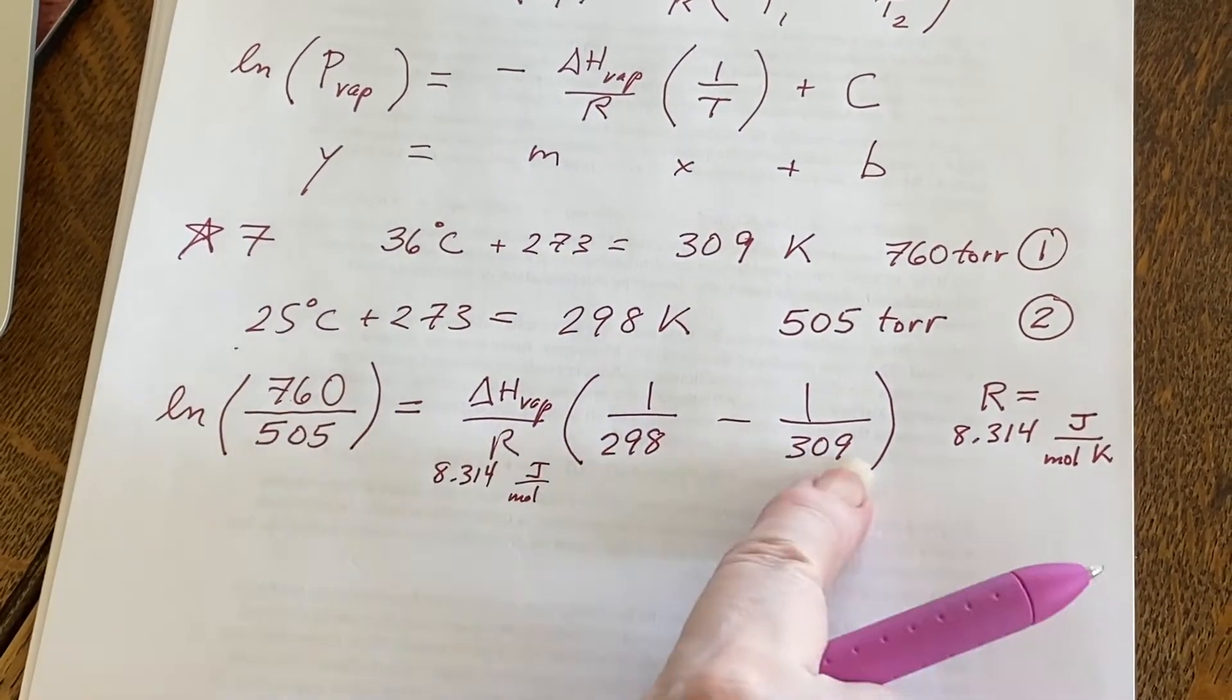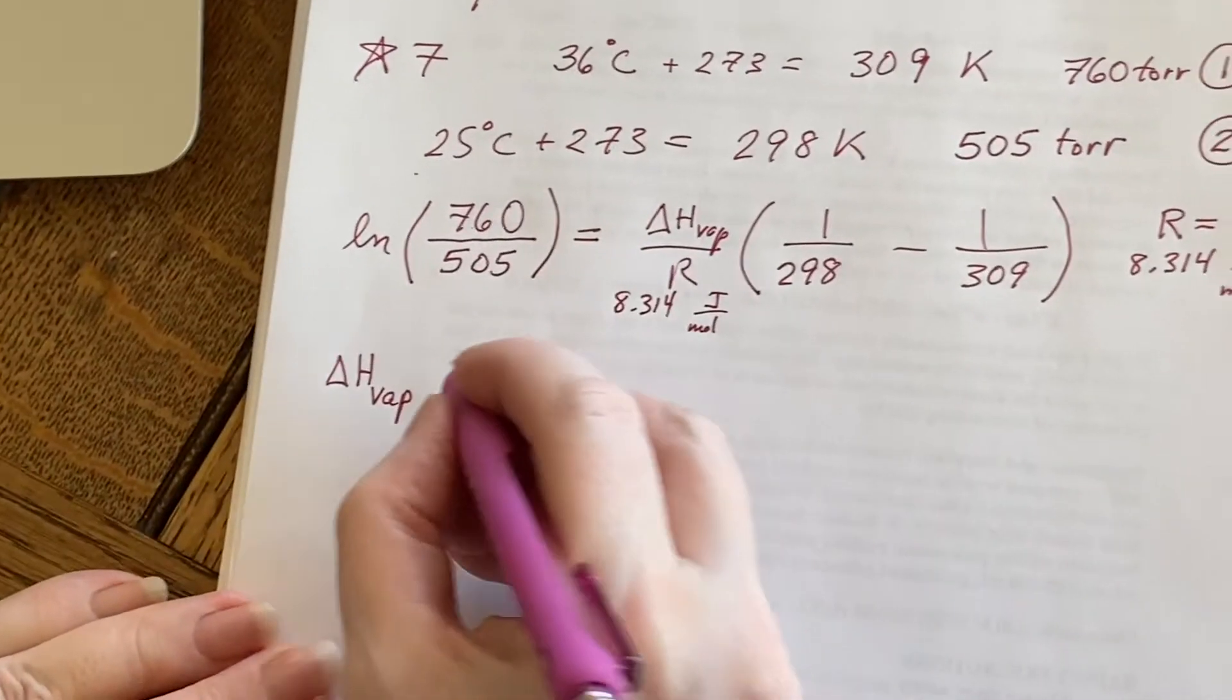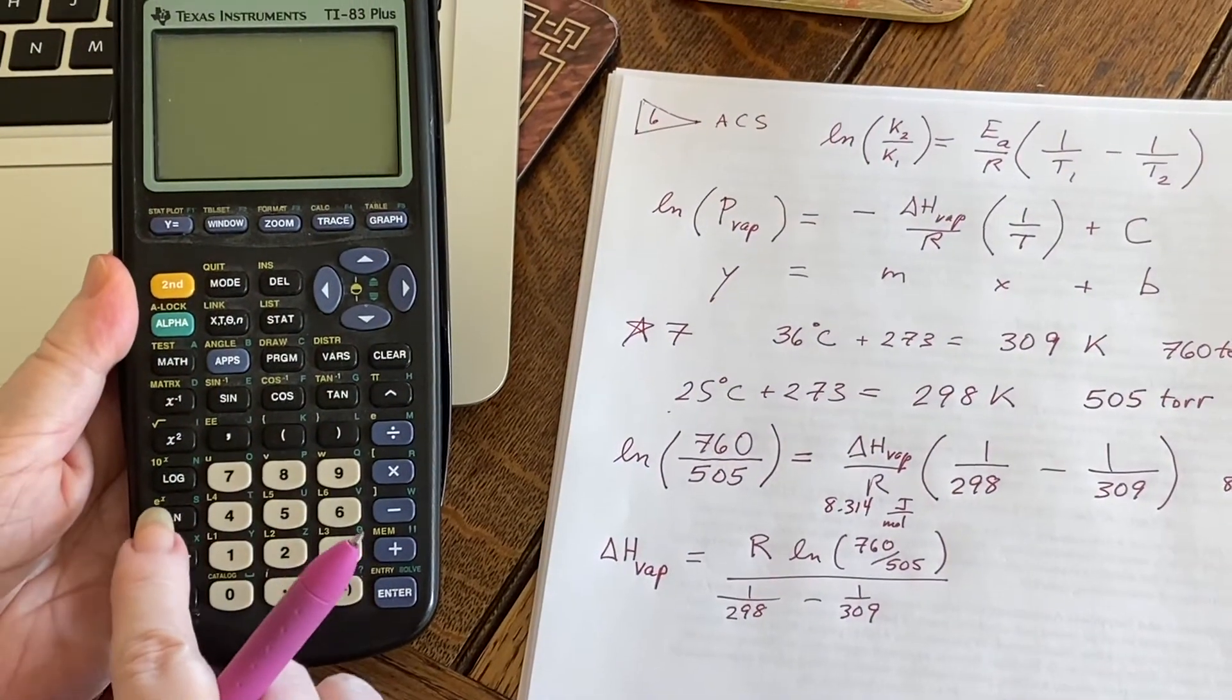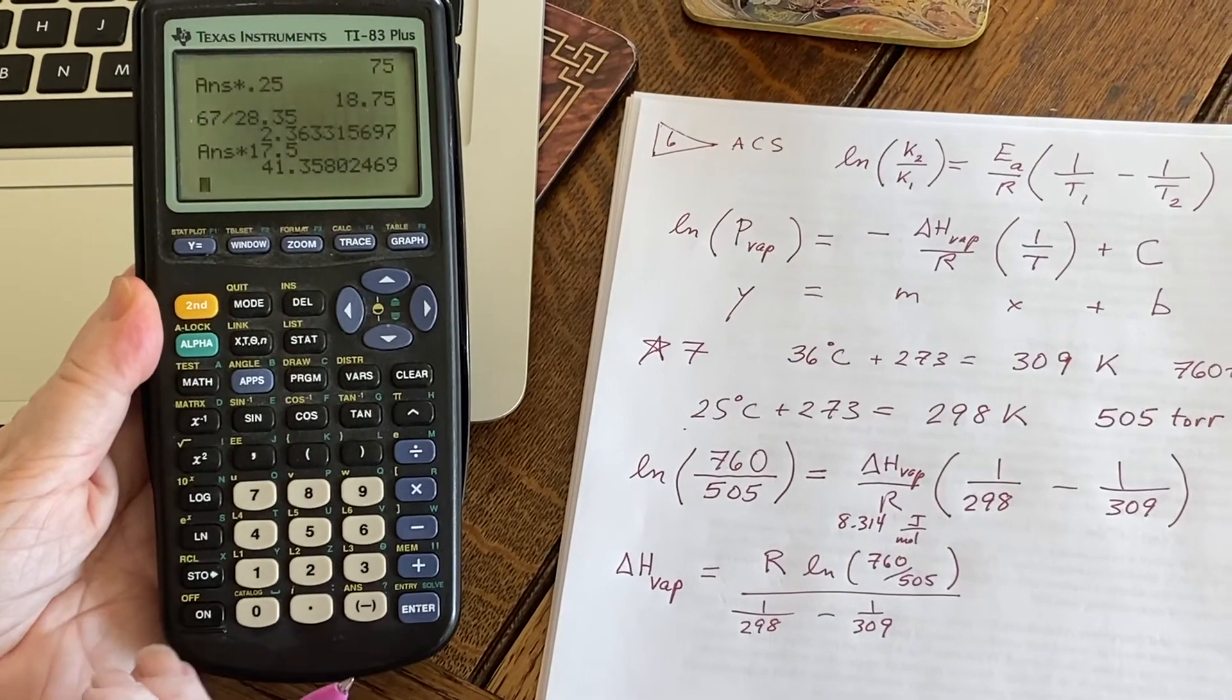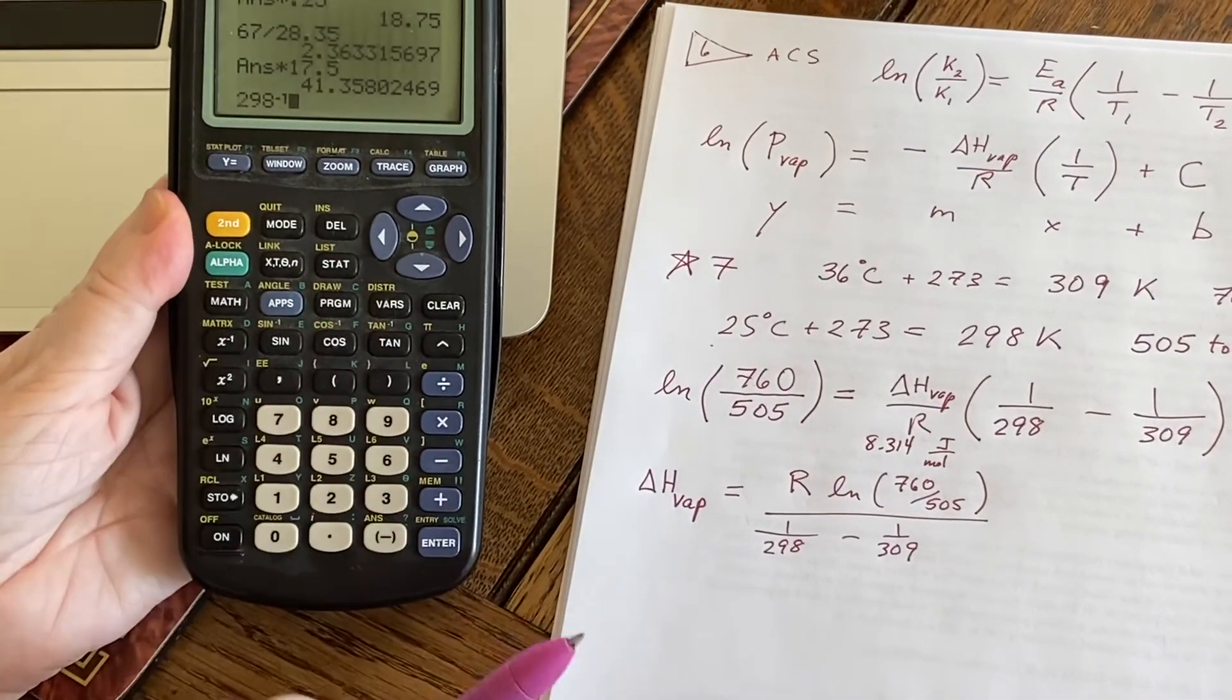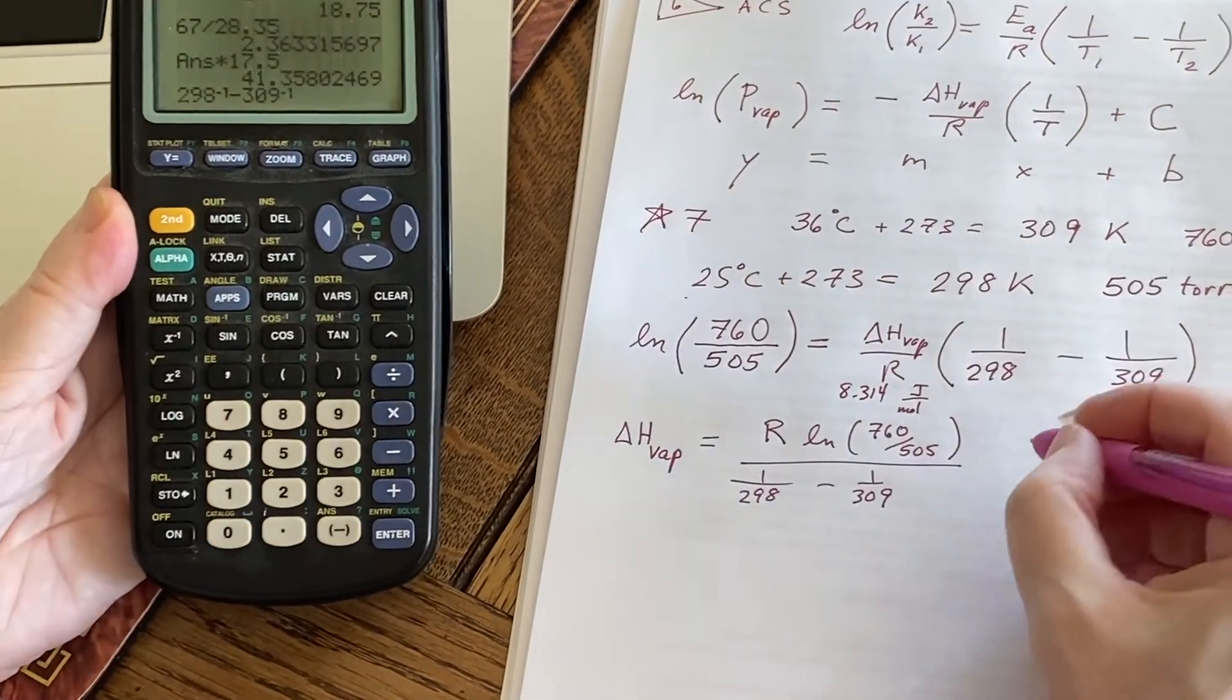This is now going to be the 8.314 and that will be joules per mole. That means I have numbers everywhere except there. I will rearrange this whole formula to get this by itself. Now one thing I would like to point out is that on many calculators there's a button like this. That's a very useful button because I will be able to put this whole thing in very easily. I can put in 298, press this button, and then say I'm going to subtract 309 with this and I will end up with what this number is down below.